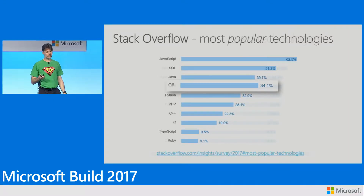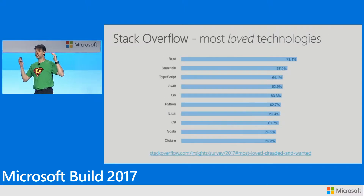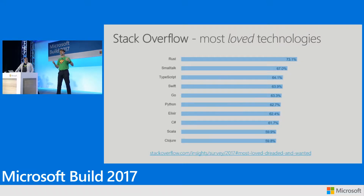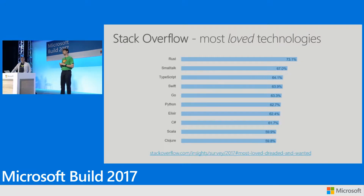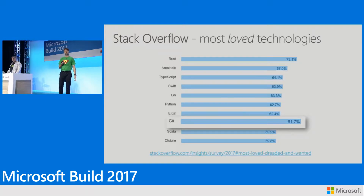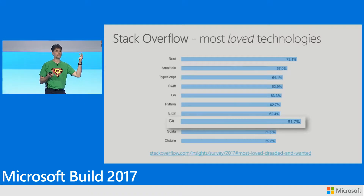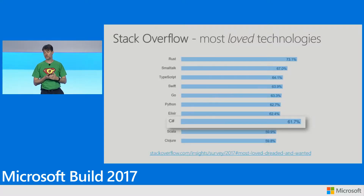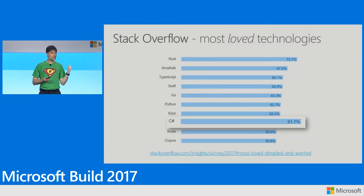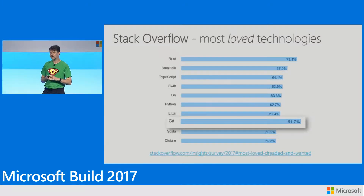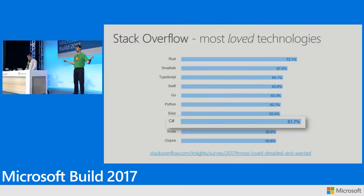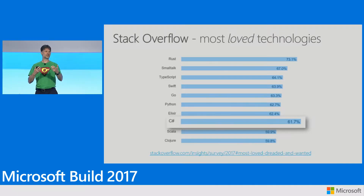Every year, Stack Overflow does a developer survey asking people what they use and what they like. C# is pretty high on their list — in the top 10 most popular technologies. There are a few above us and there will probably remain a few. Hey, it's good to be number four. C# is also on the list of most loved technologies — languages that people use and would like to continue using. Three languages are on both lists: C#, TypeScript, and Python. All three are well supported in Visual Studio.